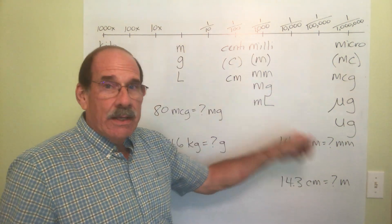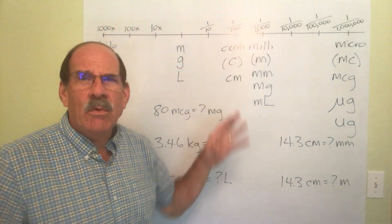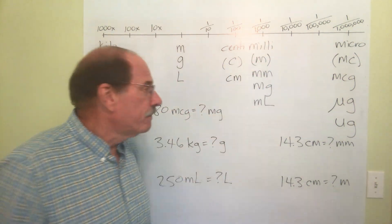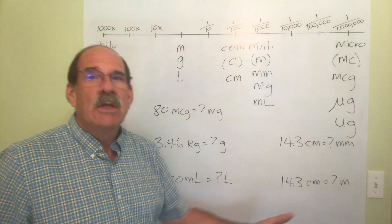I move which way? Left. How many places? 1, 2, 3. I hope you see this, how it works. I'm merely moving the dot, the decimal point, three little jumps to the left.